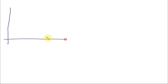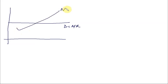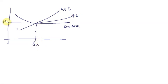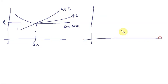In perfect competition, demand equals MR, and this intersects with MC and AC. Our point of production is Qc and the price being charged is Pc.